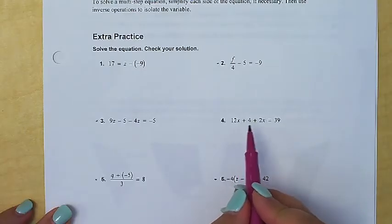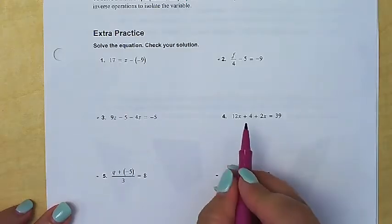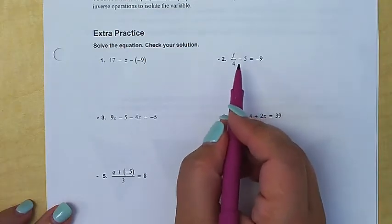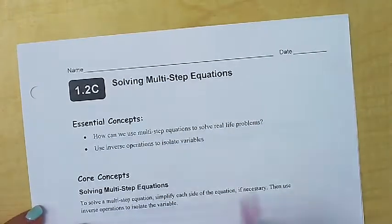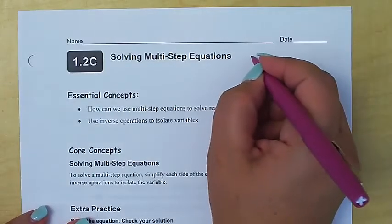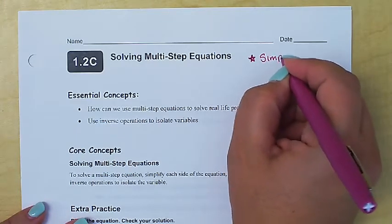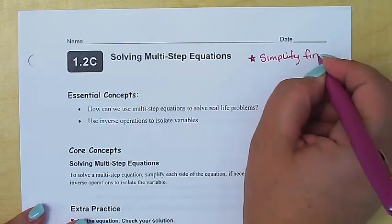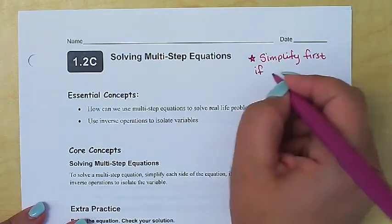The reason for reviewing combining like terms or the distributive property is because oftentimes we'll have to do that work first so that we can get the equation simplified enough to look simple enough to solve. The big idea today is when you have an equation, we're going to add a new step now that they're getting more complex: always simplify each side first, if possible. If I write it down, you write it down.